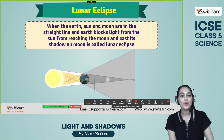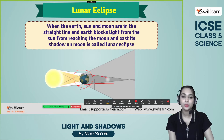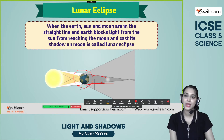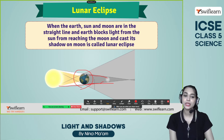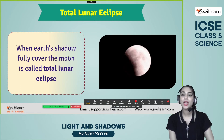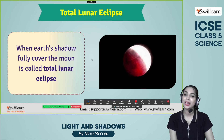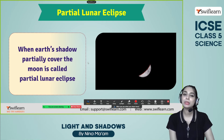Now let's learn about the lunar eclipse. When the sun, moon, and earth are aligned in a straight line, the earth blocks the sunlight from reaching the moon and casts a shadow on the moon — this is known as the lunar eclipse. When the earth, sun, and moon are in a straight line and the earth blocks the light from reaching the moon and casts a shadow on it, that is called the lunar eclipse. When the earth's shadow fully covers the moon, it is a total lunar eclipse. When the earth's shadow partially covers the moon, it is called a partial lunar eclipse.